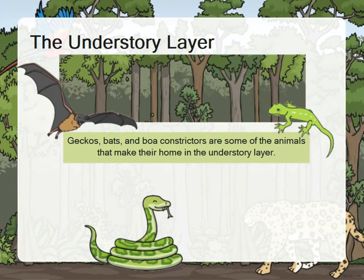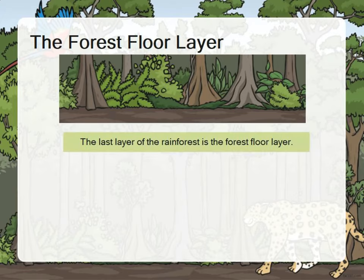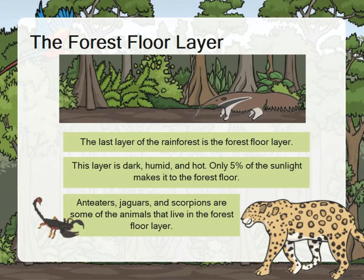The last layer of the rainforest is the forest floor layer. This layer is dark, humid, and hot. Only five percent of the sunlight makes it to the forest floor. Anteaters, jaguars, and scorpions are some of the animals that live in the forest floor layer.